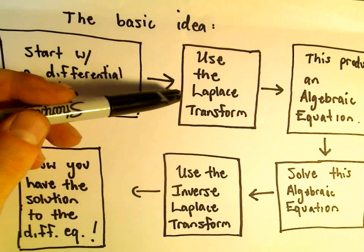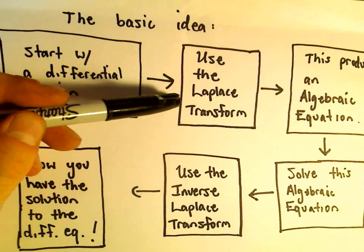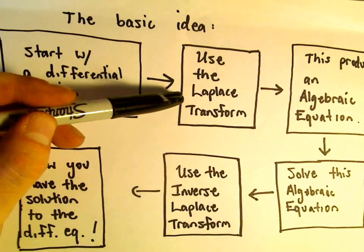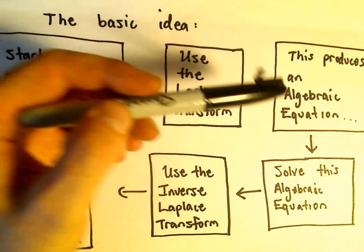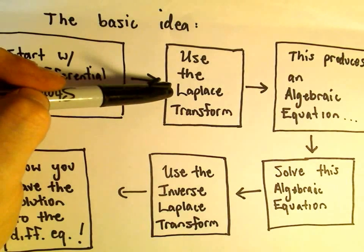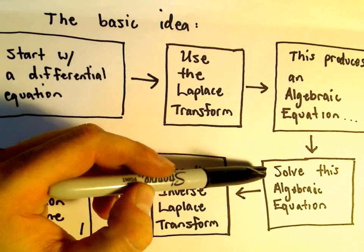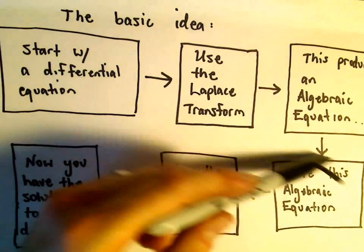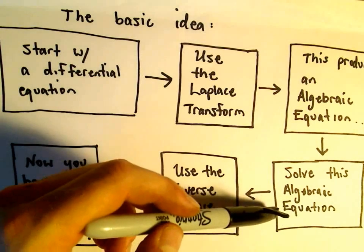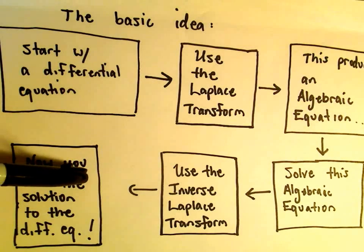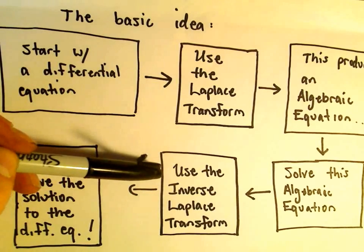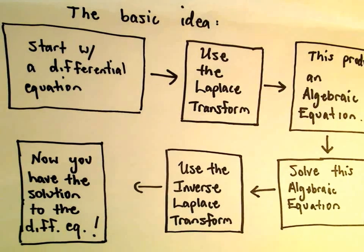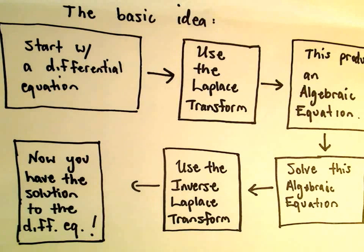The Laplace transform is what's known as an operator — it transforms one function into a different type of function. What we end up getting is a nice algebraic equation. After we do our Laplace transform, we then solve this algebraic equation, and that solution is going to help us recover information about the solution to the original differential equation. Once we solve this algebraic equation, we use what's called the inverse Laplace transform, and that gets us back to the solution to the original differential equation.